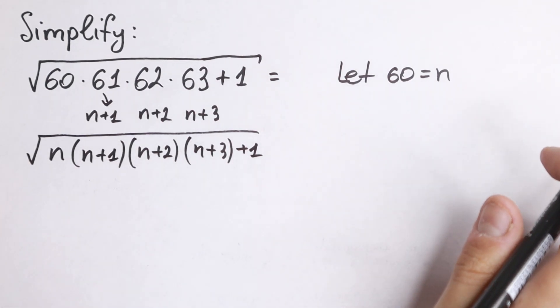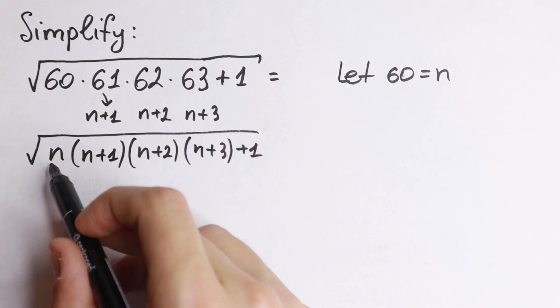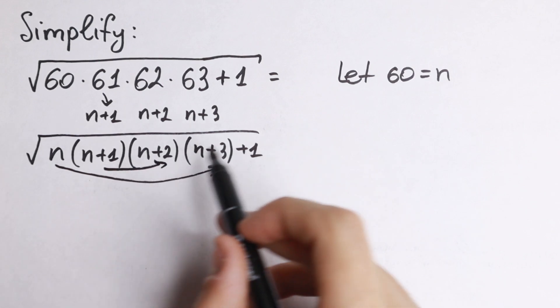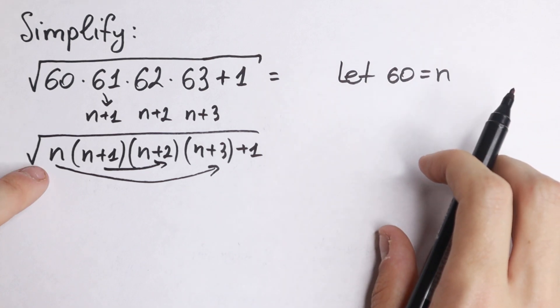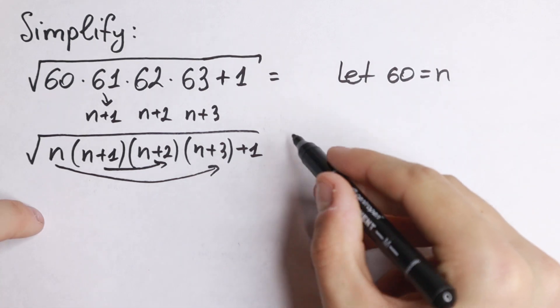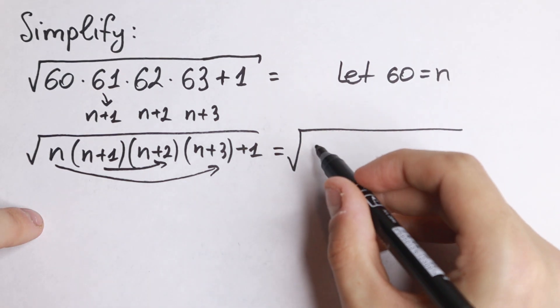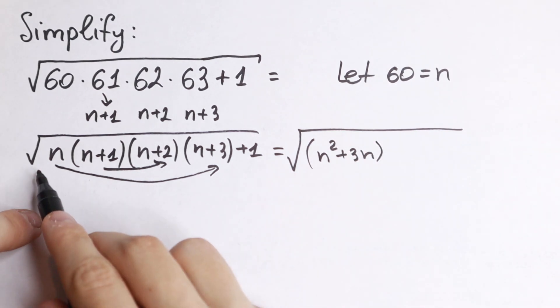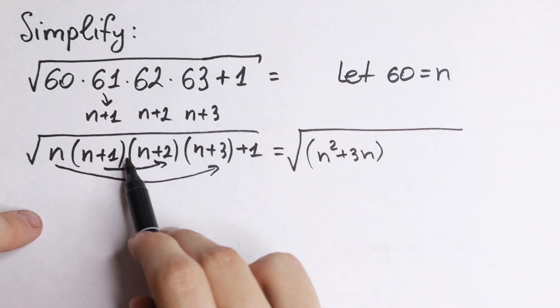What are we going to do next? Let's group n and n plus 3, and n plus 1 and n plus 2. If we multiply n by n plus 3, we will have n square plus 3n. And if you multiply n plus 1 and n plus 2, you will have n square plus 2n plus n plus 2.